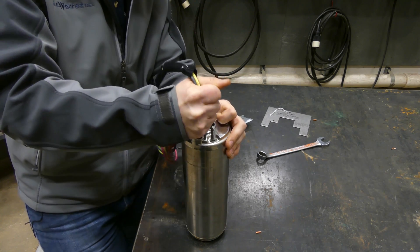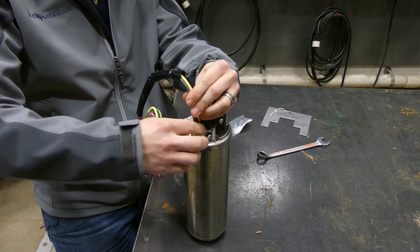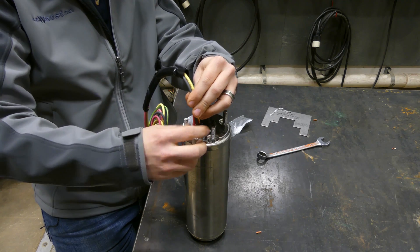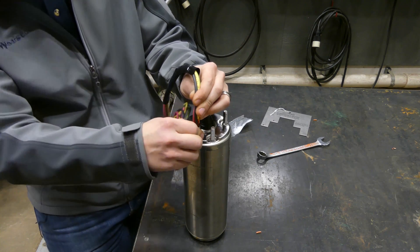And it definitely feels like it's all the way down right now. The way to test that is if you can thread this in almost the whole way with your fingers, you've done it properly. So once it's in all the way, finger tight.